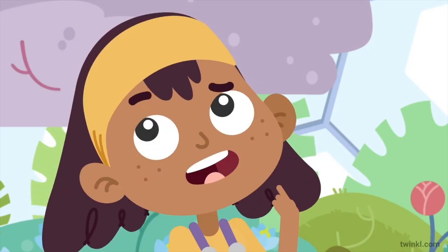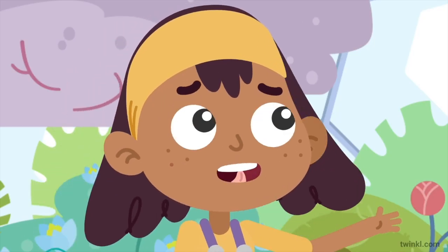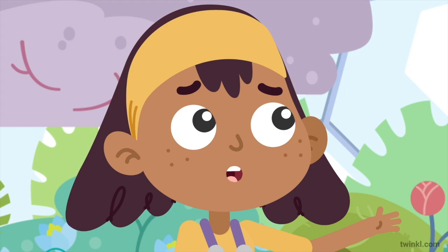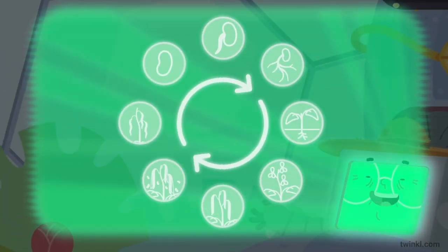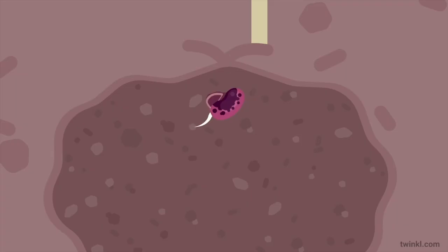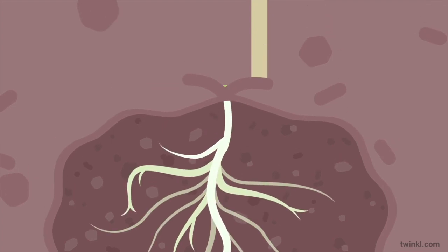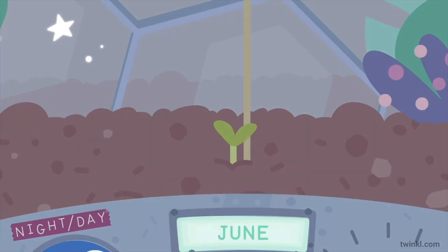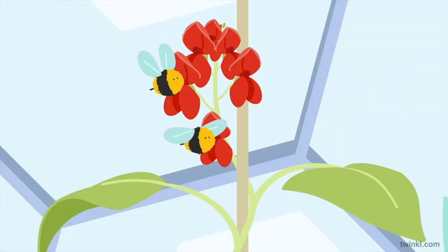What happens after plants die? How do new plants grow? Like other living things, all plants have a life cycle. Plant life cycles show how they grow over days, weeks, months, or even years.